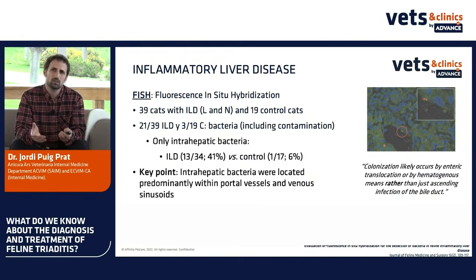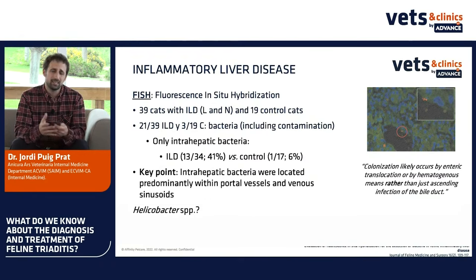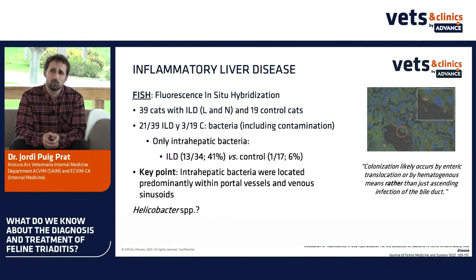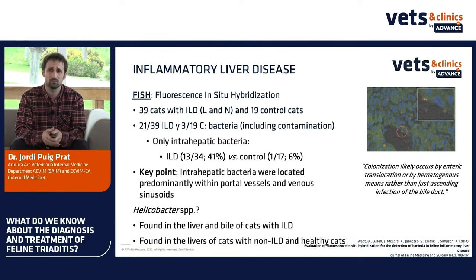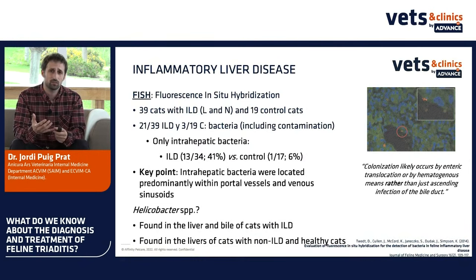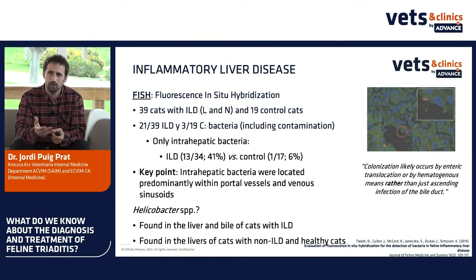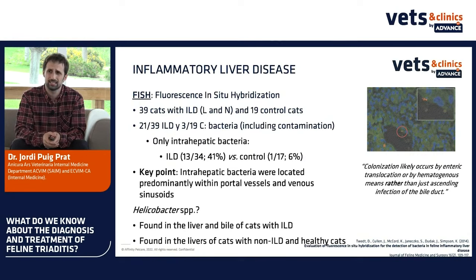What about Helicobacter? Helicobacter has been found in the liver and bile of cats with inflammatory liver disease. However, it was also found in livers of cats with non-inflammatory liver disease like lymphoma, and also in healthy cats. Therefore, we tend to look for that disease with caution.